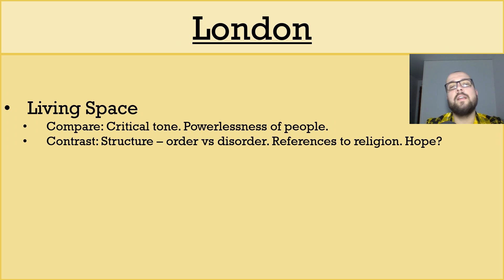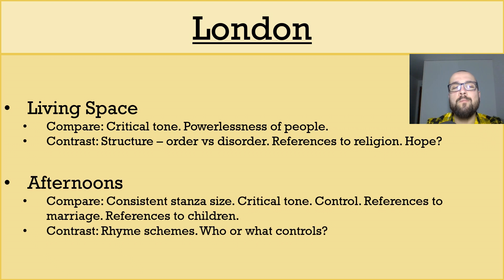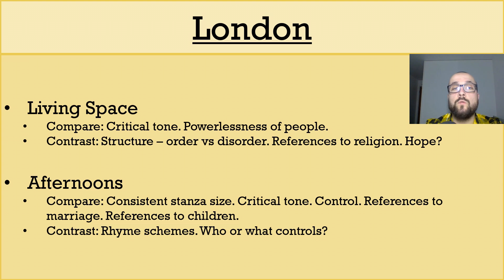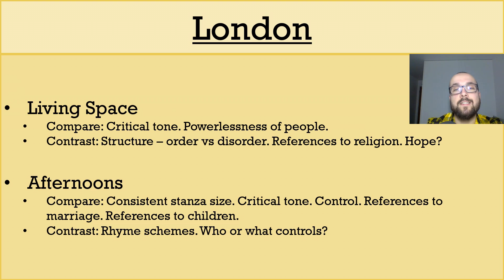And if you don't fancy comparing London to Living Space, why not compare it to Afternoons instead? Both poems have consistent stanza lengths, which could be indicative of a sense of control, or routine, or a never-ending cycle. Again, both poems have a critical tone, but whereas this criticism is directed at the city of London and the people in power in Blake's poem, the criticism in Afternoons seems to be directed more at the institution of marriage, women, domestic life, and getting older.